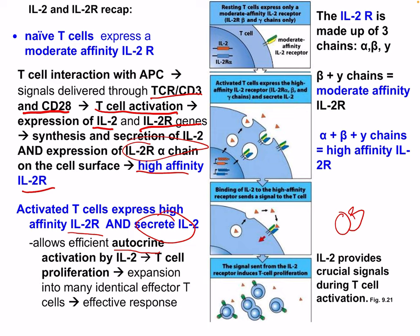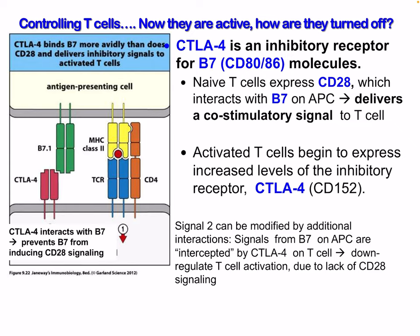Activated T cells express high-affinity IL-2 receptor and also secrete IL-2, essentially stimulating themselves — autocrine signaling — causing an effective response. The IL-2 receptor is made up of three chains: alpha, beta, and gamma for high affinity, while beta and gamma alone give moderate affinity.